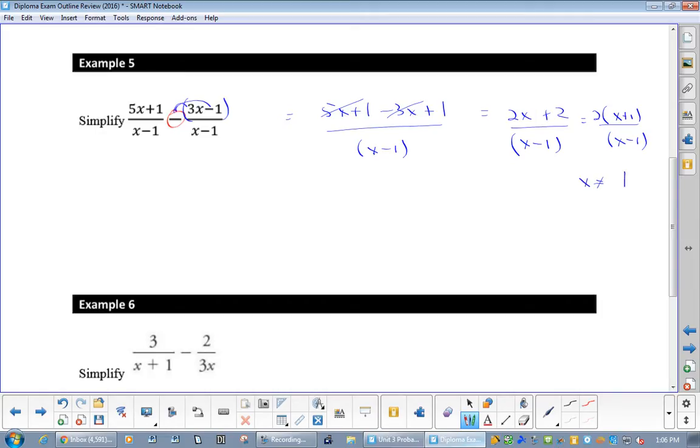Now you can factor out a 2 in the top, leaving me with x plus 1 over x minus 1. And x cannot equal 1. 5x minus 3x is 2x, and 1 plus 1 is 2. Yeah, because my negative multiplied to that 3. That's a minus sign out front.